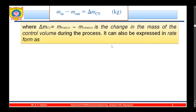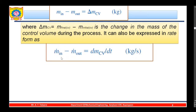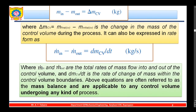It can also be expressed in rate form as: m_dot_in minus m_dot_out equals dm_cv/dt, expressed in kg per second, where m_dot_in and m_dot_out are the total rates of mass flow into and out of the control volume, and dm_cv/dt is the rate of change of mass within the control volume boundaries.